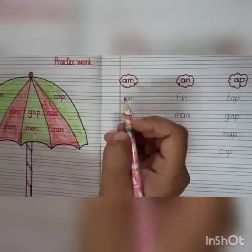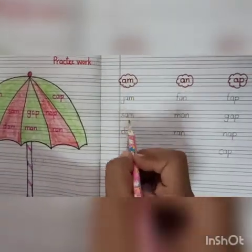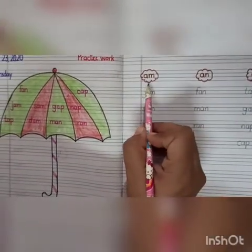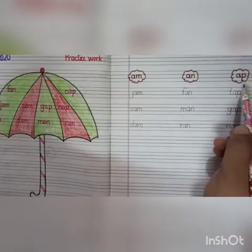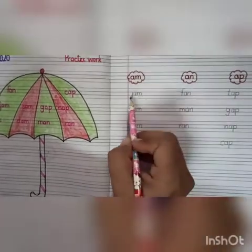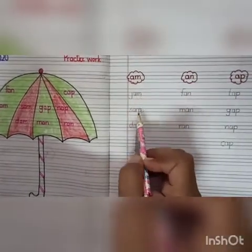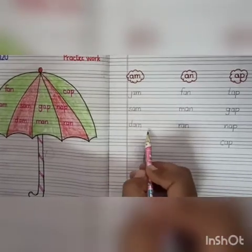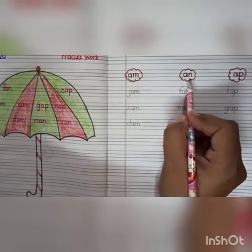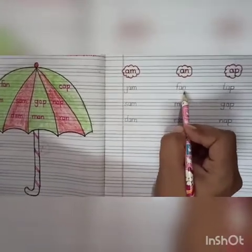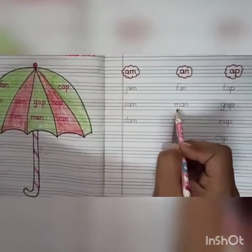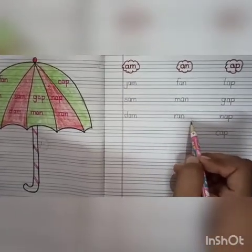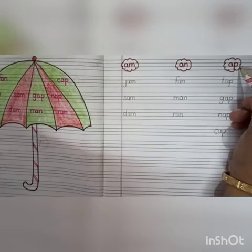Now, let's read all these words again and again so we come to know the difference between 'am,' 'an,' and 'ap.' J, am — jam. S, am — sam. D, am — dam. The next ones belong to the 'an' family: F, an — fan. M, an — man. R, an — ran.